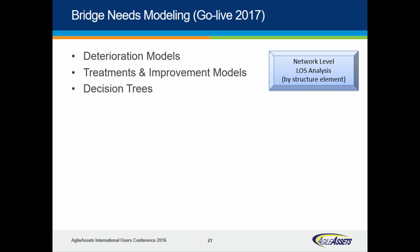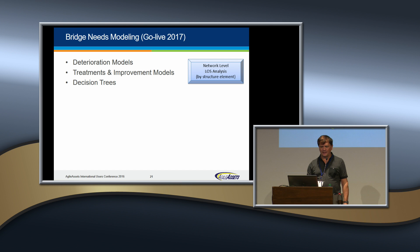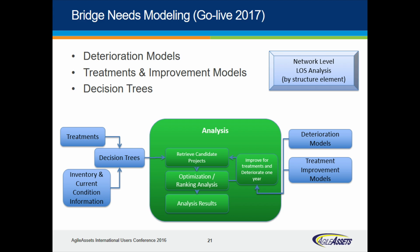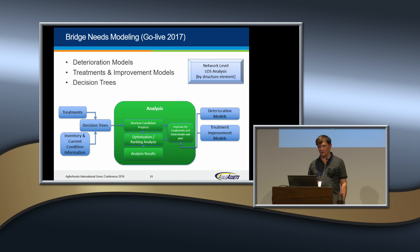We have treatment and improvement models and decision trees, which we call our legacy rules — handed down at some point. They tell us a bridge in a certain condition state should have a minor rehab, or a vertical down, or some kind of treatment. Inventory and condition come in on one end. The element is in a current condition, will deteriorate over time, and based on where it is on that deterioration curve, the system determines what the treatment should be. That treatment then tells you how far back up the deterioration curve you'll be after performing it.